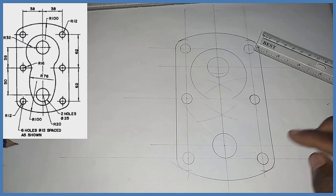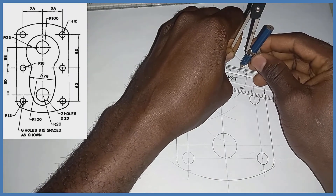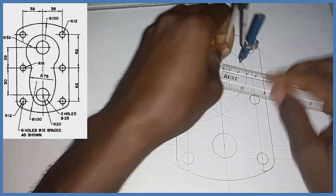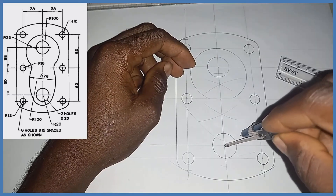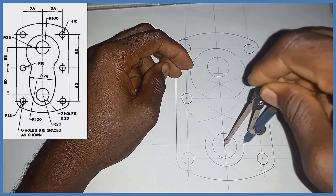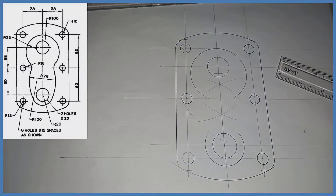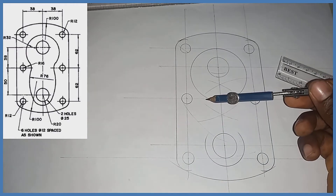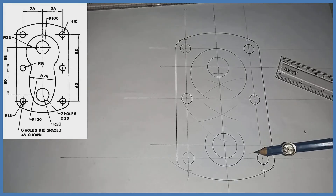After doing that, towards the bottom here I'm having an arc of radius 20. With my compass measuring radius 20, standing at the center, I'm going to draw — as you can see on the screen — with radius 20. We are also told that we have an arc of radius 70 linking to an arc of radius 16 right here, and the same thing on the opposite side.